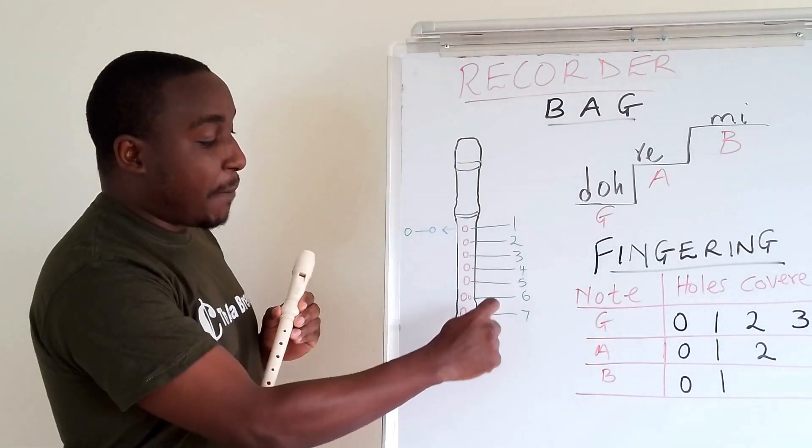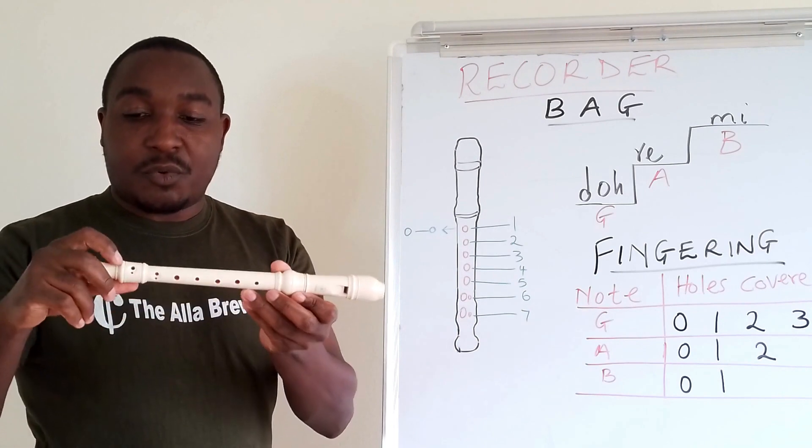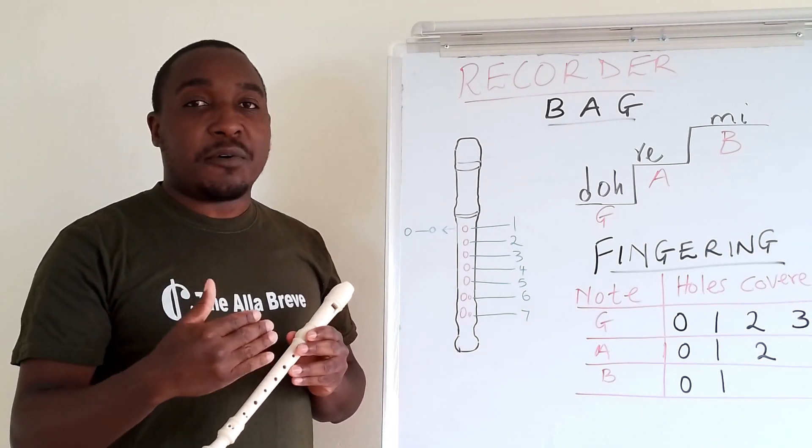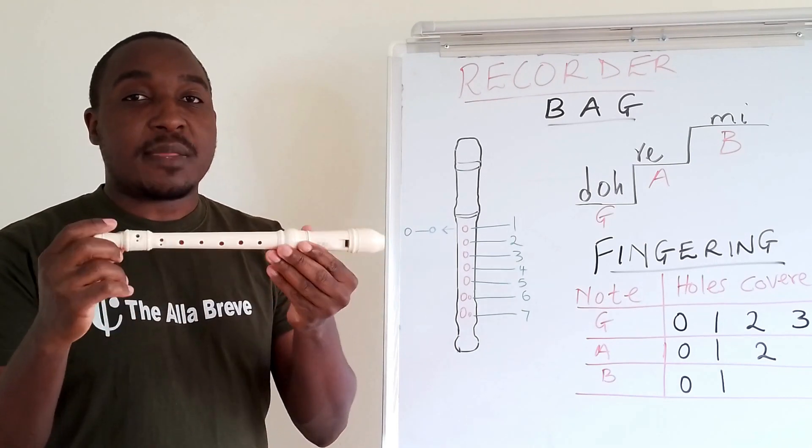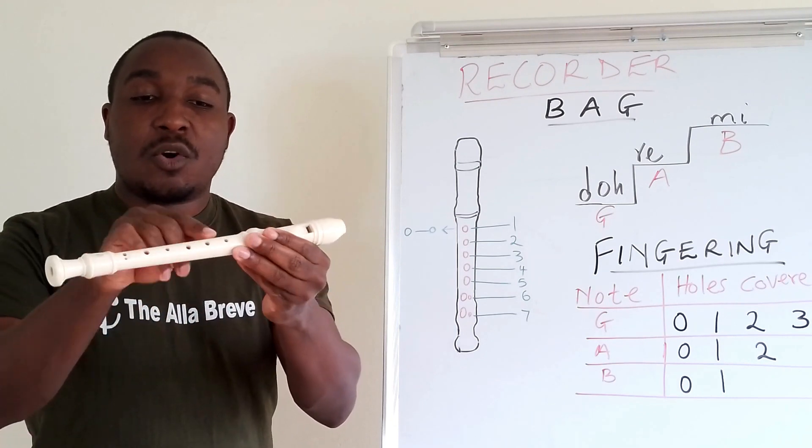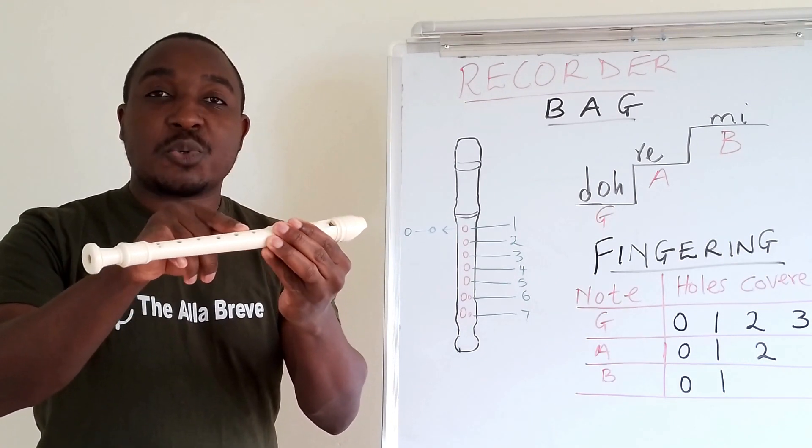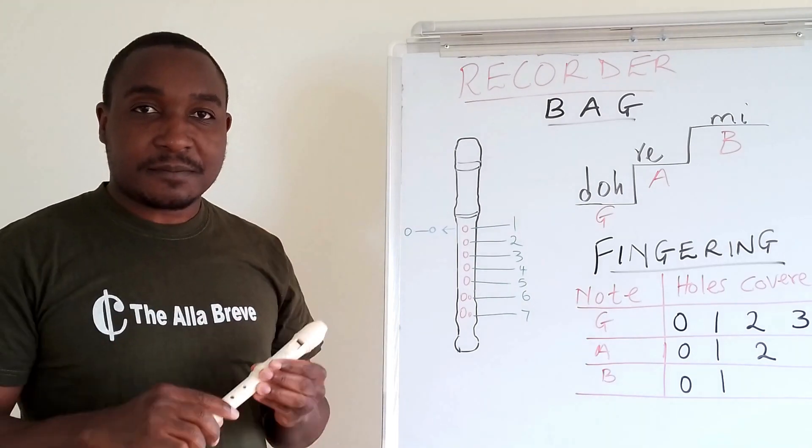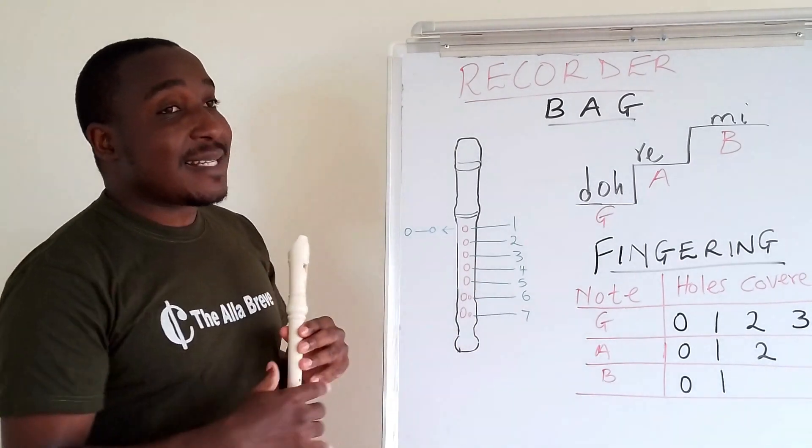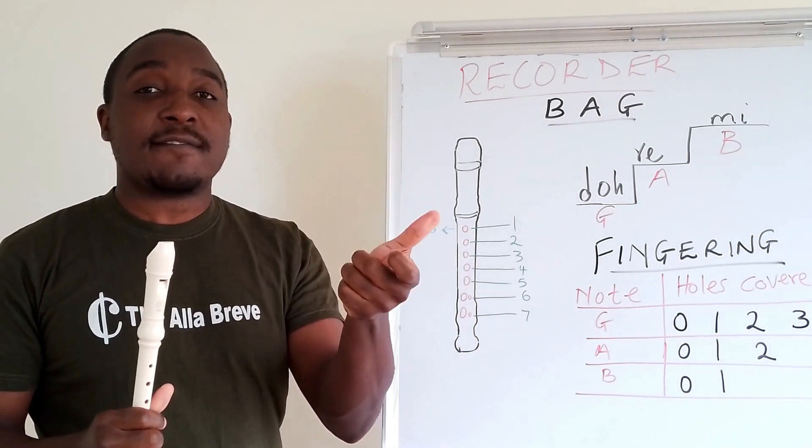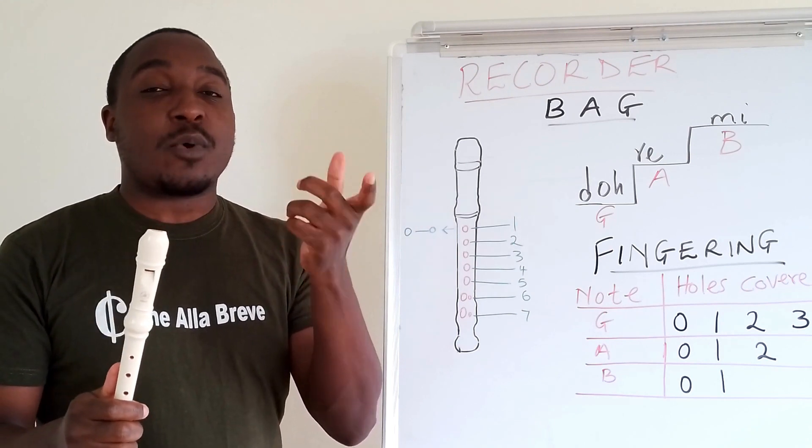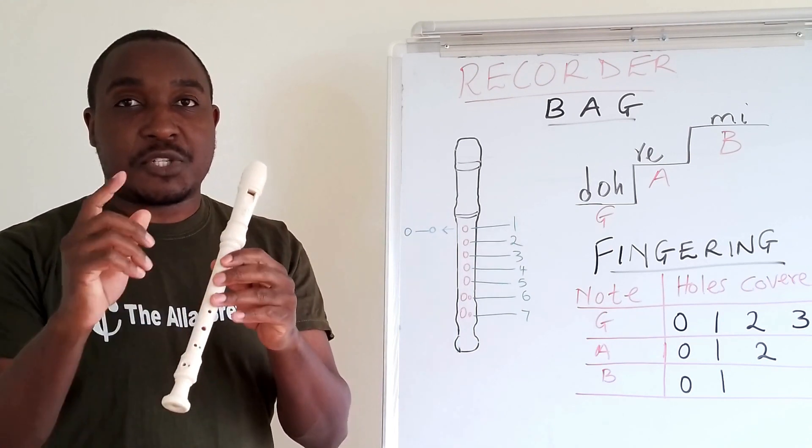And I have number 1 up to number 7, which is this pair of holes. For the purpose of teaching grade 4 how to play the Descant Recorder, we will focus on 0, 1, 2 and 3. So, the numbers indicate which hole to cover, if it is covering 0 and 1, only covering the 2, and so on.